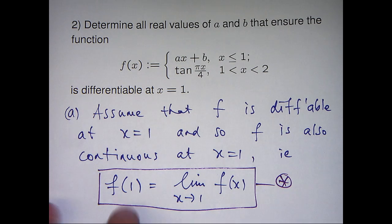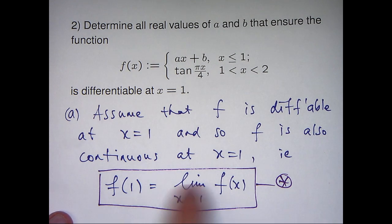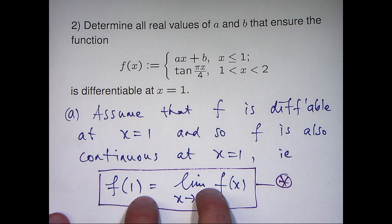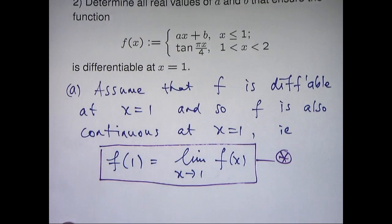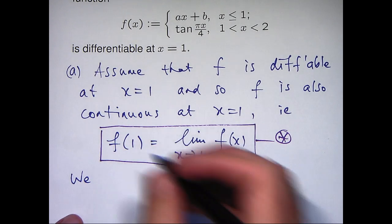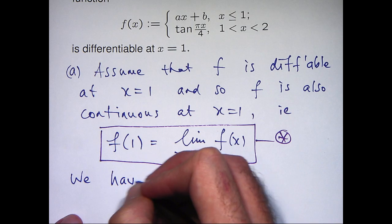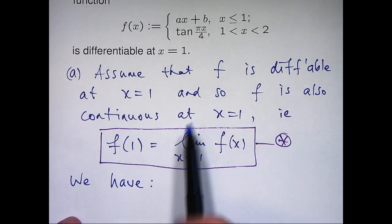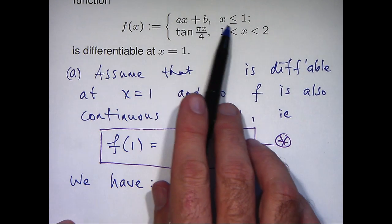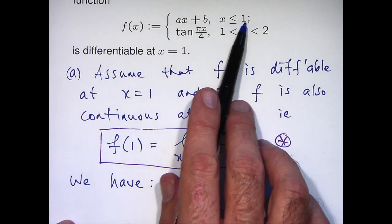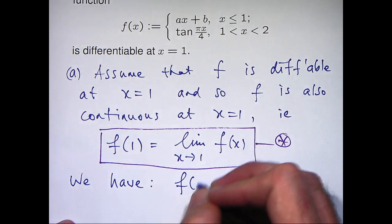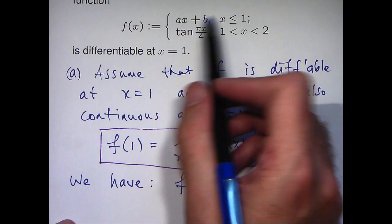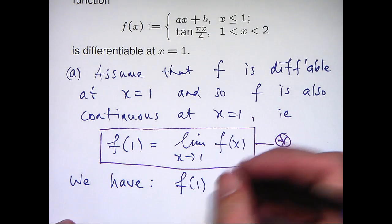Basically the value of the function at x equals 1 has to equal the limit of the function as x approaches 1. So what we're going to do is work out the left hand side and the right hand side, make them equal and then hopefully that will give us some insight into the values of a and b that we need. So let's consider f of 1. If we go up to our definition we see that for x less than or equal to 1, f of x is ax plus b, so for x equals 1 we'll just have a plus b.